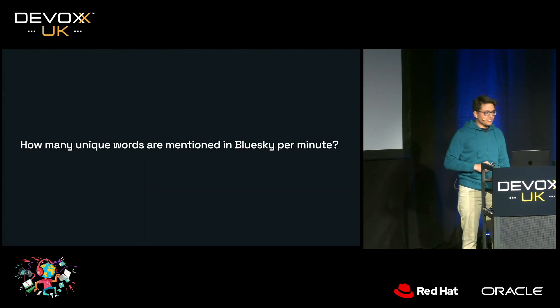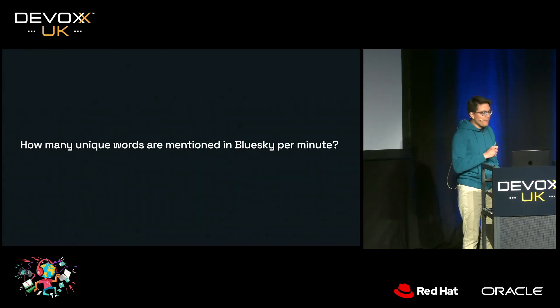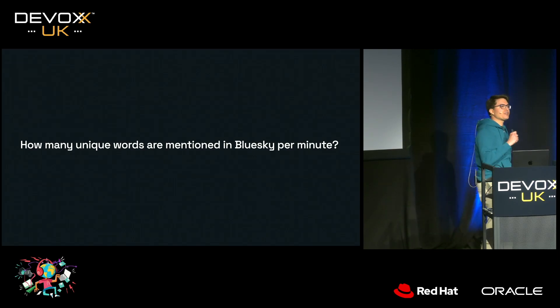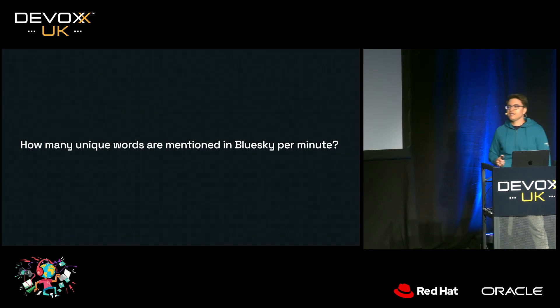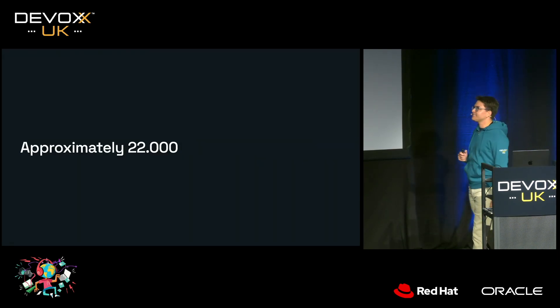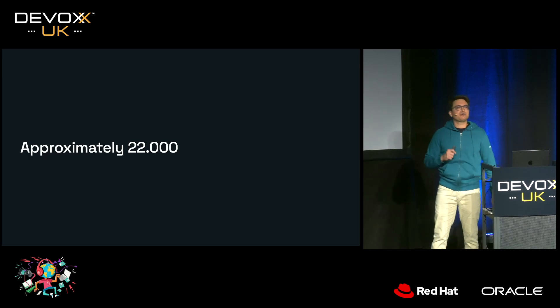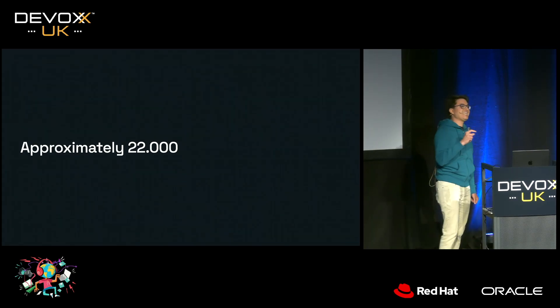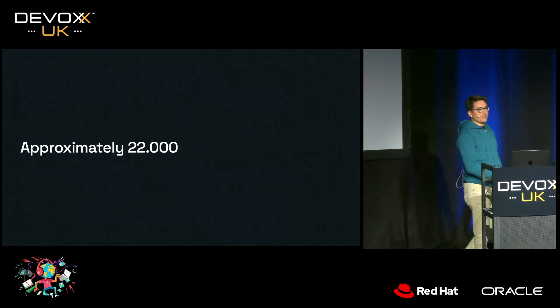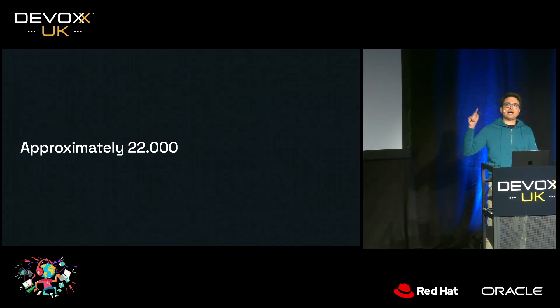Splitting the message into words and basically counting the number of times these words showed up. So how many unique words do you think are mentioned in Blue Sky per minute? Approximately 22,000 words in peak hours in English, with stop words already filtered out.